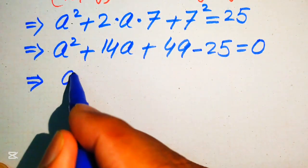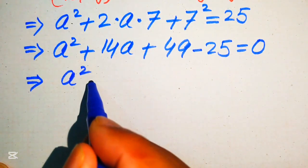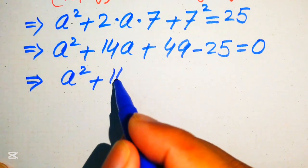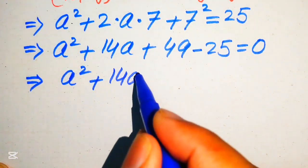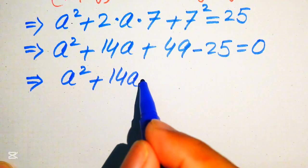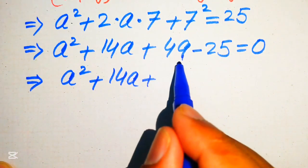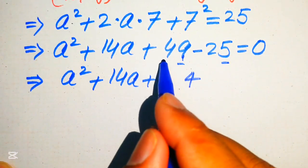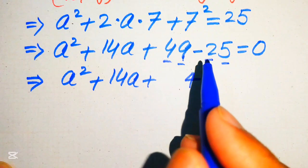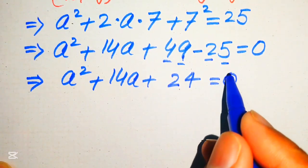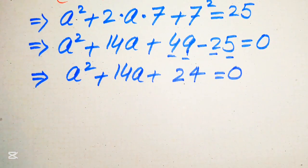Simplifying further, we have a² + 14a + 24 = 0. This is now a quadratic equation in the variable a.